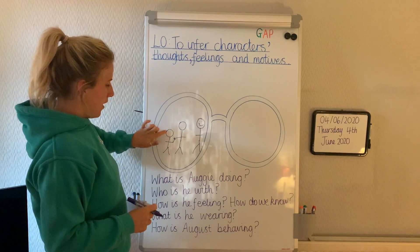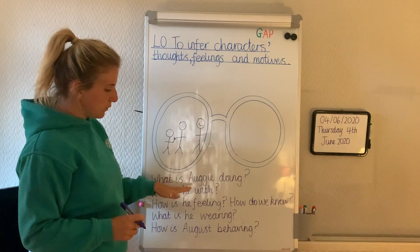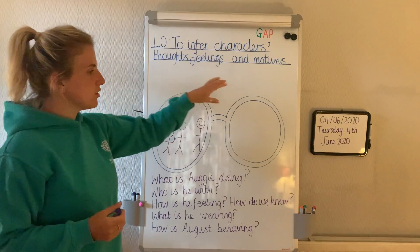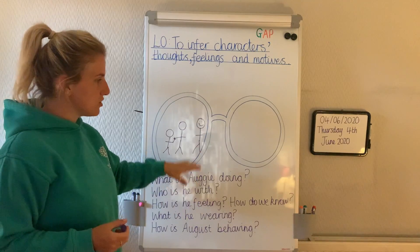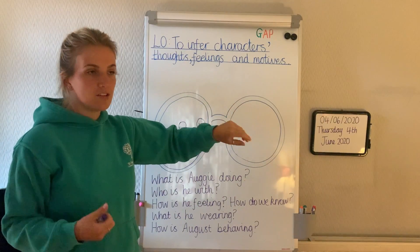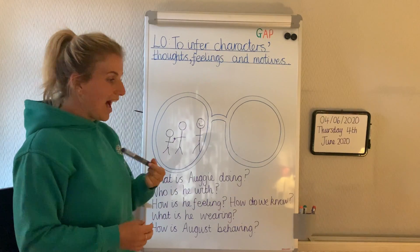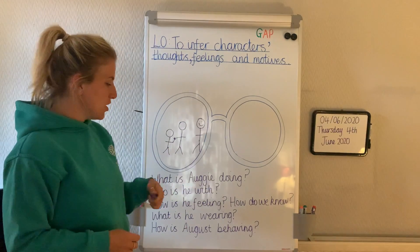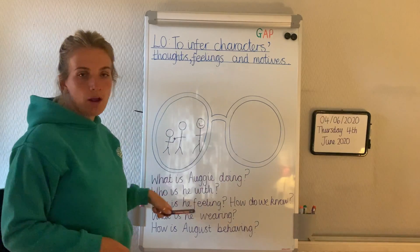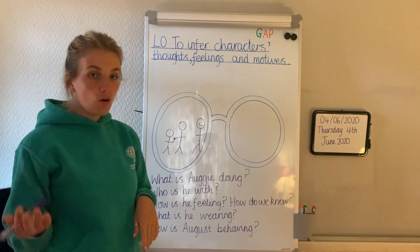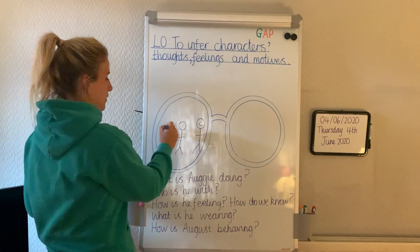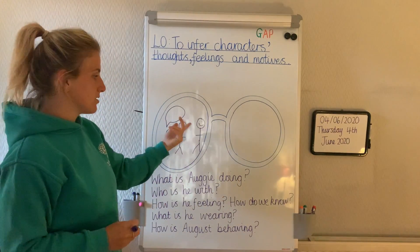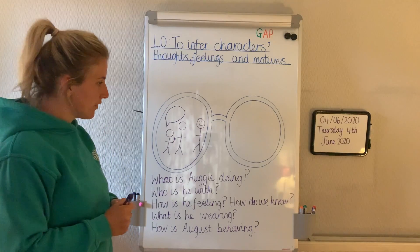Also try and include facial expressions, because we've got a few key questions to answer at the bottom which is our success criteria. Once you've done your drawings, you either need to make sure you've answered these questions within your drawings, or if you haven't — because you might not be that confident a drawer — I would answer these questions around the binoculars or glasses in either bullet points or even thought bubbles coming off the character. So really nice and simple about what August is feeling, about what Mr. Tushman is saying or doing, that kind of stuff.